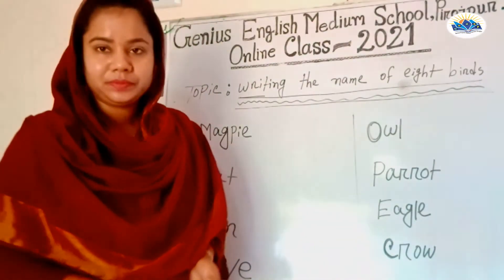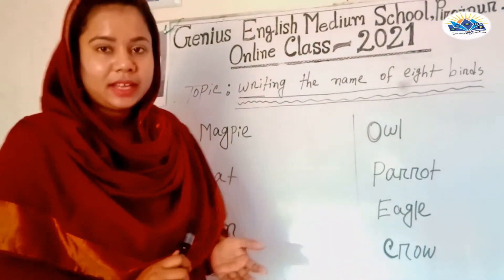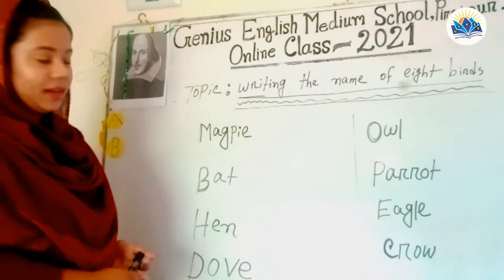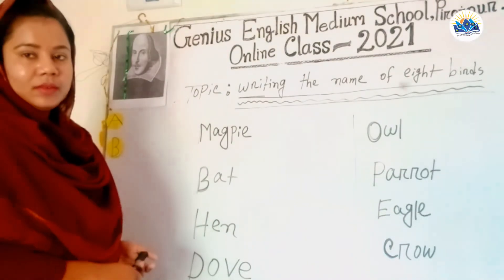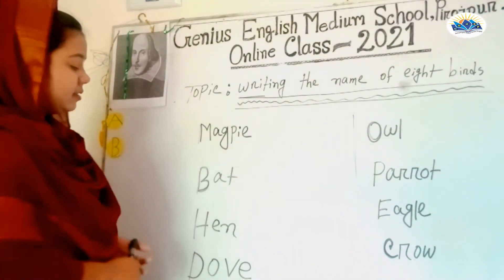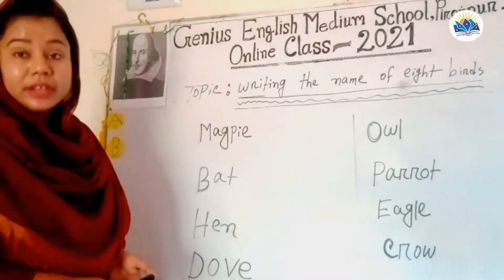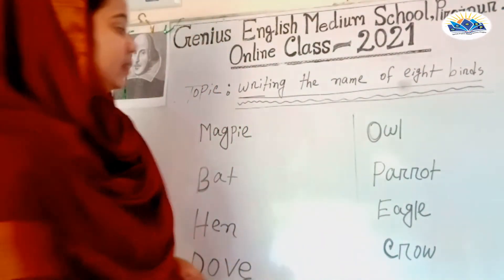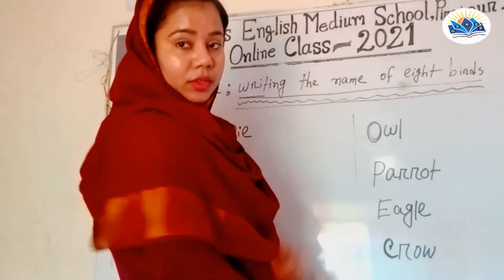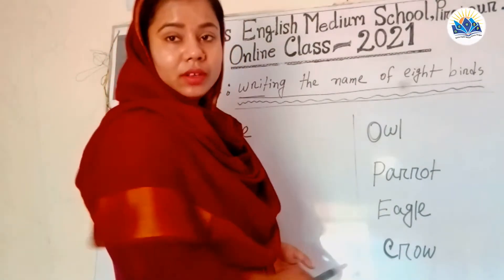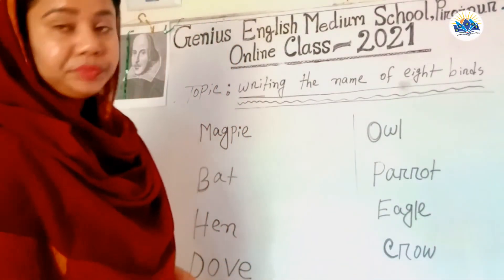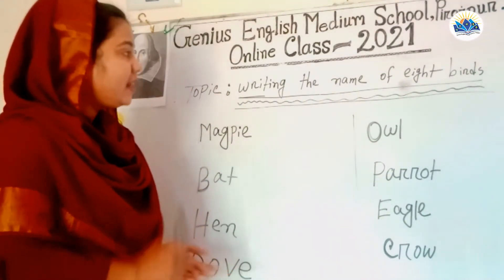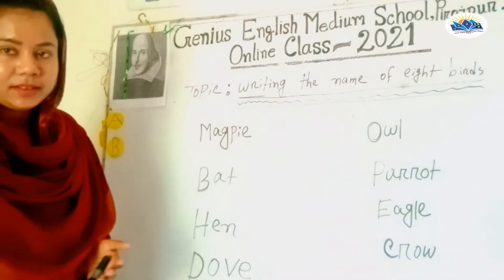This is magpie, this is bat, this is hen, this is owl, this is parrot, this is eagle, this is crow. Writing the name of eight birds — telling the name of eight birds.